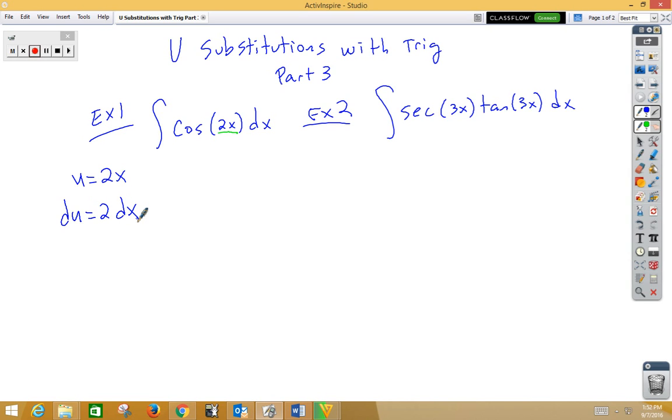Now, we don't have a 2dx. We simply have a dx. So if I would like to multiply by 2 on the inside, I must divide by 2 or multiply by 1 half on the outside. I get 1 half integral cosine u du. Now, we recognize cosine as the answer for the derivative of sine. So this becomes 1 half sine, not really u, so we're going to replace the u with the 2x plus c.